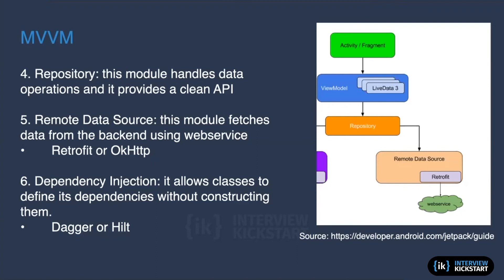Another important concept here is dependency injection. The repository class needs an instance of the web service to fetch user data. Rather than creating that instance itself — which would require knowing the web service's dependencies — it's better to use a dependency injection library. Dependency injection allows classes to define their dependencies without constructing them; another class is responsible for providing them. You can use Dagger or Hilt as dependency injection libraries for this purpose.